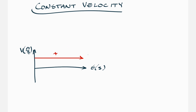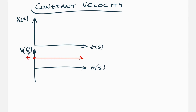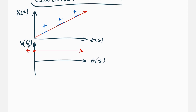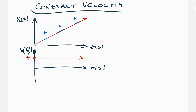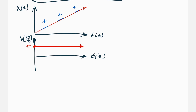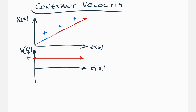For a positive constant velocity, the slope is zero since it's constant. On an x versus t graph (x in meters, time in seconds), since the velocity value is positive, the slope is a constant positive value — that's just a straight diagonal line. Anytime you have constant velocity motion, you get a straight diagonal line on the x versus t graph.